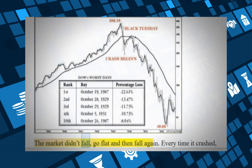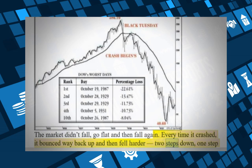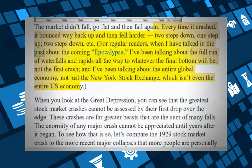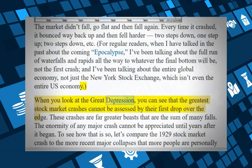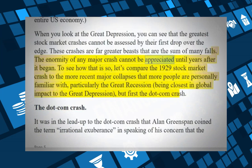The market didn't fall, go flat, and then fall again. Every time it crashed, it bounced way back up and then fell harder — two steps down, one step up, two steps down, etc. When I have talked about the coming epic collapse, I've been talking about the full run of waterfalls and rapids all the way to whatever the final bottom will be, not just the first crash, and about the entire global economy, not just the New York Stock Exchange. The greatest stock market crashes cannot be assessed by their first drop. These crashes are far greater beasts that are the sum of many falls.